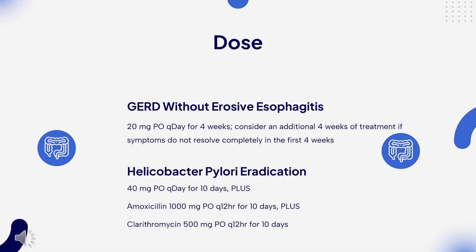NSAID-induced gastric ulcer: 20 mg PO once daily for 4–8 weeks. Zollinger-Ellison syndrome: 80 mg PO divided every 12 hours initially; adjust regimen to efficacy; up to 240 mg PO once daily or 120 mg PO every 12 hours. For reduction of re-bleeding of gastric or duodenal ulcers following therapeutic endoscopy in adults: 80 mg IV infused over 30 minutes, then continuous IV infusion of 8 mg per hour for a total treatment duration of 72 hours.